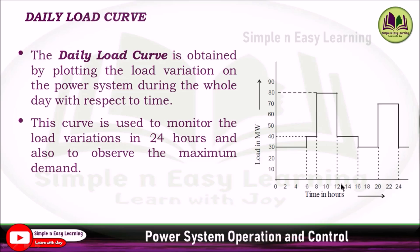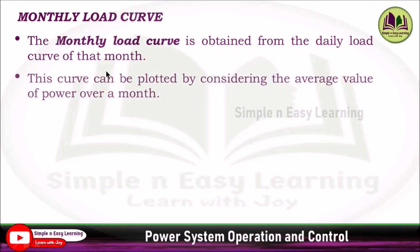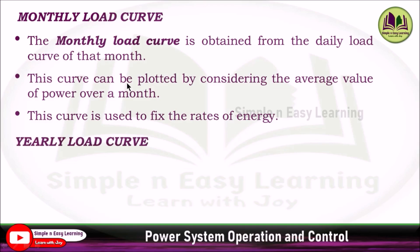For example, in this load curve we can observe that the maximum demand is 80 megawatt, which occurs during 8 AM to 12 noon. For the monthly load curve, it can be obtained from the daily load curve of that particular month by considering the average value of power over a month — that is, 30 days. This curve is used to fix the rates of energy for a particular month based on how much energy is consumed.